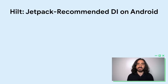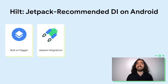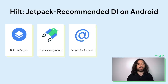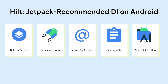To recap: Hilt is the new recommended Jetpack dependency injection library, built on top of already proven Dagger. It has integrations with ViewModels, Fragments, and WorkManager. It has well-defined scopes for Android, and out-of-the-box testing APIs so you can replace your dependencies per test, with support for both integration and Robolectric tests. It also has Android Studio integration for a more delightful developer experience. It is available as alpha today, and we have even created a cheat sheet to quickly get started.